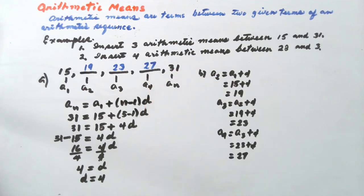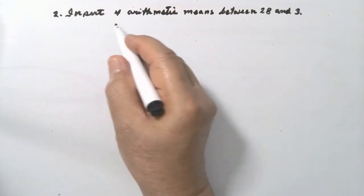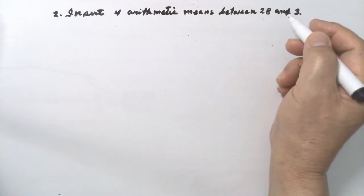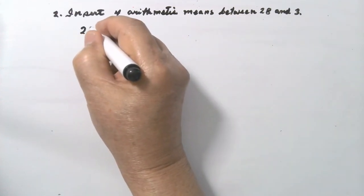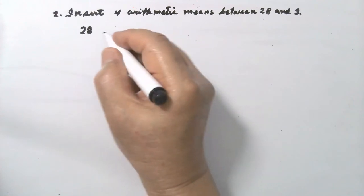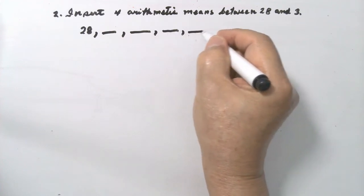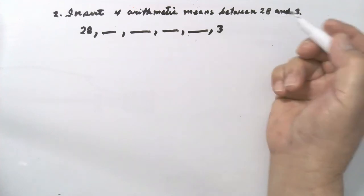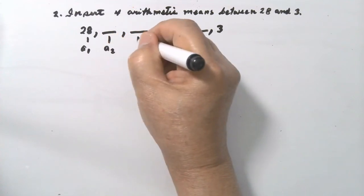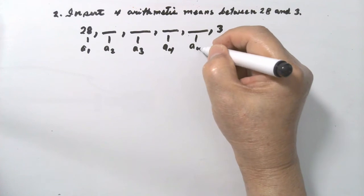So the three arithmetic means between 15 and 31 are 19, 23, and 27. Let us now solve number 2: insert 4 arithmetic means between 28 and 3. The two given terms are 28 and 3, so we are asked to insert 4 arithmetic means: 28, then one, two, three, four, and then 3.